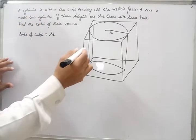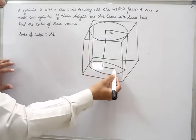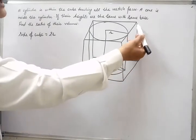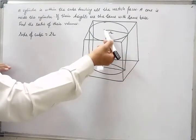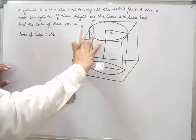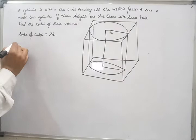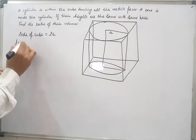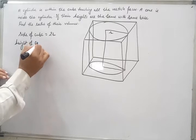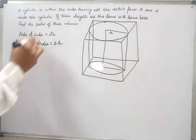The height of this cylinder is also equal to the side of the cube. So the height of the cylinder is also 2r.